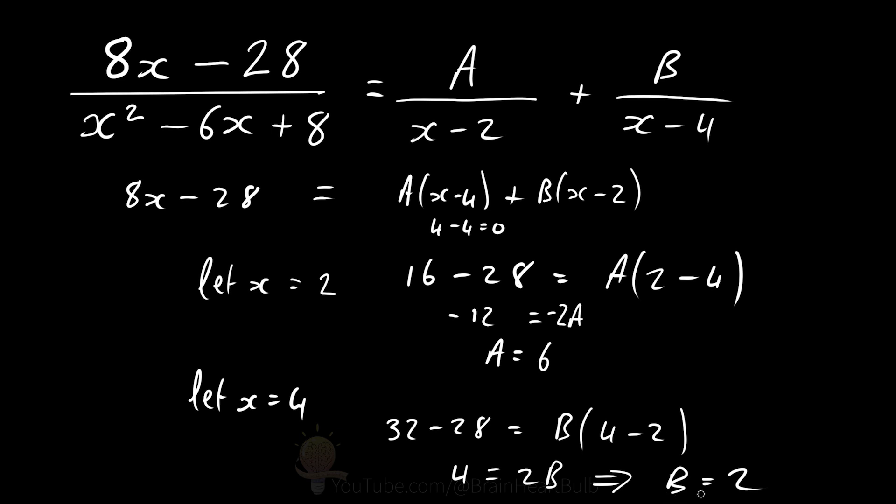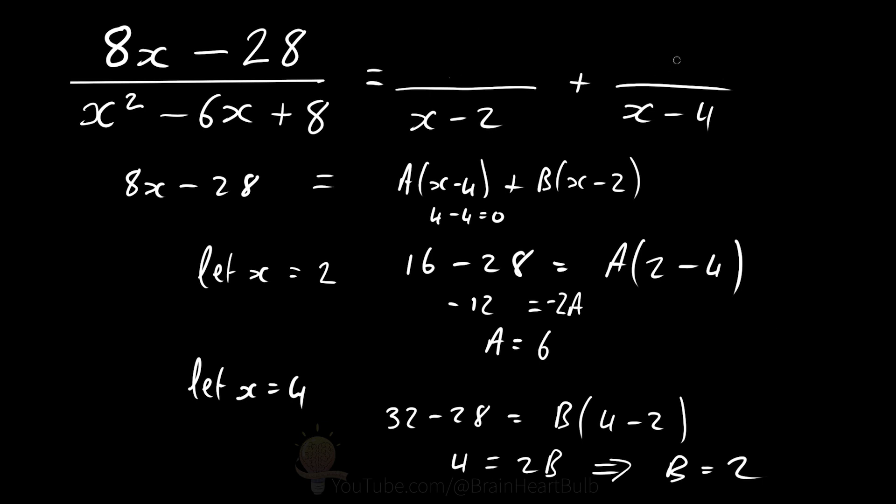So we can plug these constant values into our partial fraction up here. And that gives us our solution. So A is 6 and B is 2.